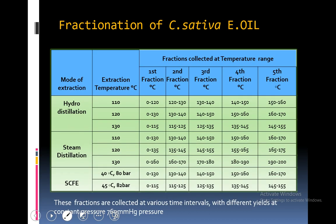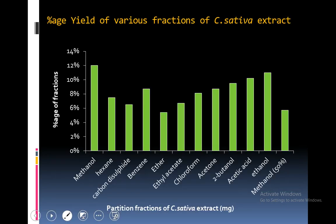Various fractions were collected at various temperature ranges of the hydro-distilled, steam-distilled and supercritical fluid extracted essential oil. Five fractions were collected at various temperature ranges with different yields at a constant pressure of 760 mmHg. We did not vary the pressure in hydro-distillation and steam-distillation, but varied pressure in supercritical fluid extraction. Various fractions of Cannabis sativa extract using solvents at various polarities are shown — the highest yield was obtained with methanol, followed by ethanol, 2-butanol, acetone and benzene.